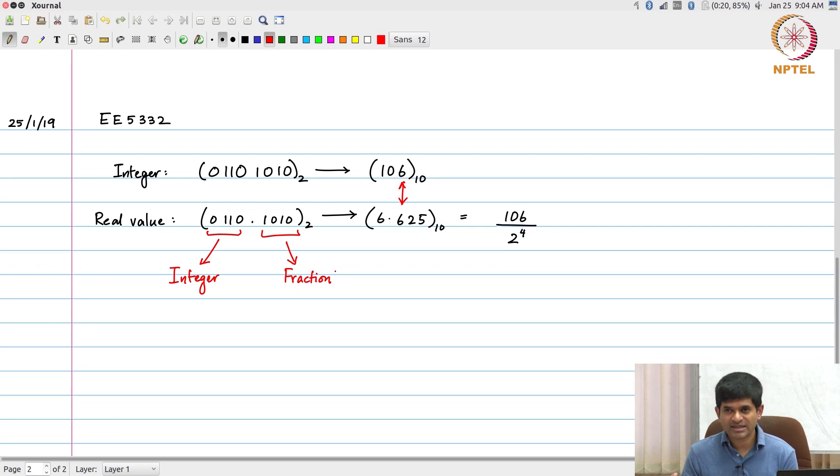There are a few things that come up as a result of this particular choice that we have made. One of them in particular is what is the range of numbers that I can represent by doing so.